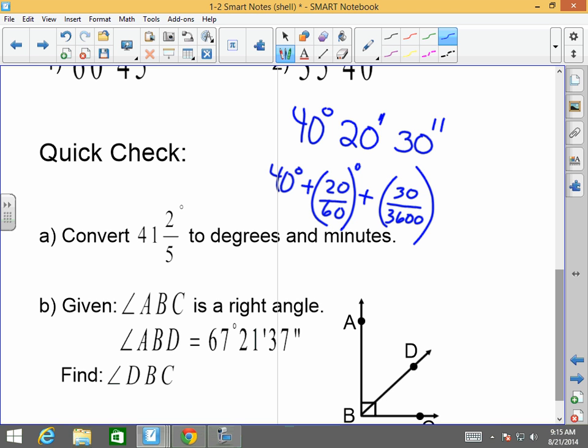Think about it. If there's 60 minutes in one degree and 60 seconds in one minute, that means there's 3,600 seconds in one degree. So, if you were to see degrees, minutes, and seconds, the minutes get divided by 60 to convert to degrees, and the seconds get divided by 3,600 to convert to degrees. Thank you so much.